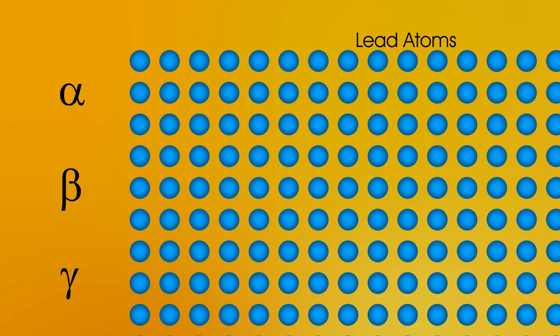We see lots of lead atoms all tightly packed together. When the atoms change colour, that will mean they've been ionised.